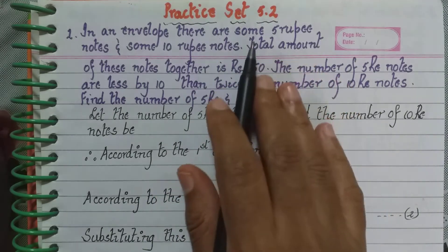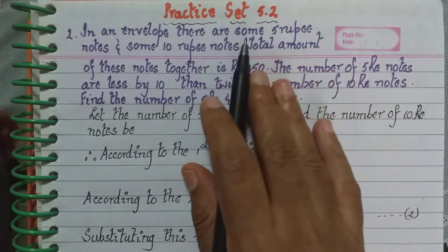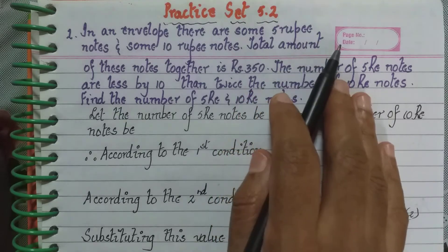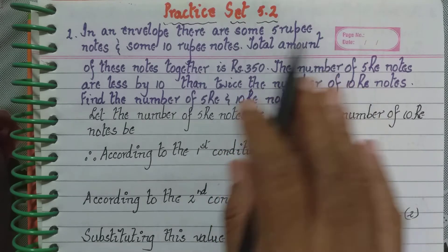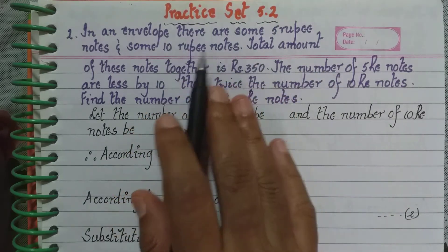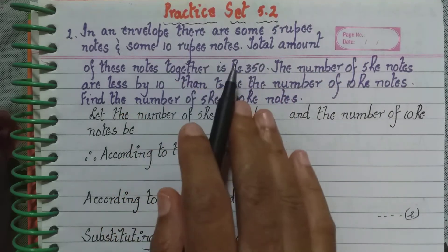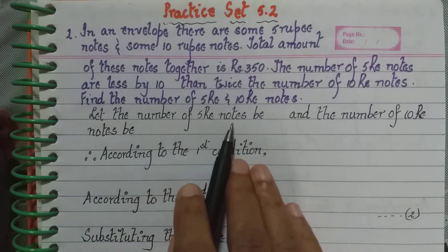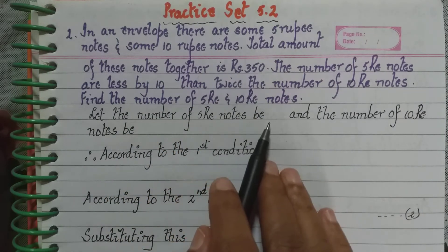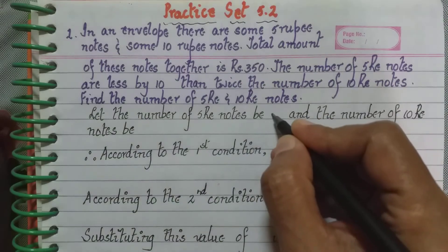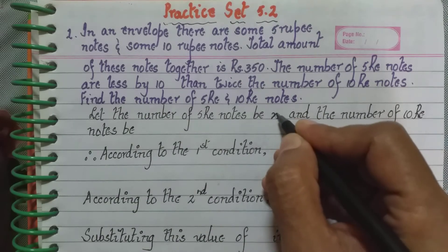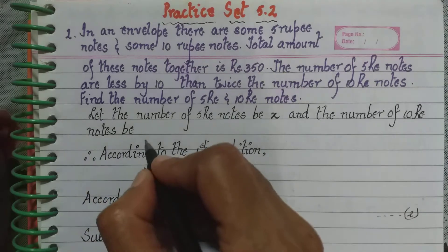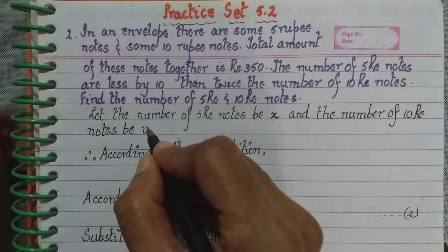We can consider the number of 5 rupee notes to be X, and the number of 10 rupee notes present in the envelope to be Y. So let the number of 10 rupee notes be Y.